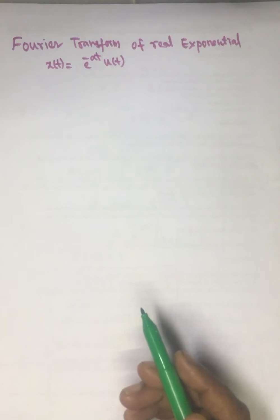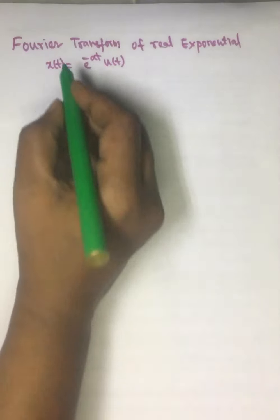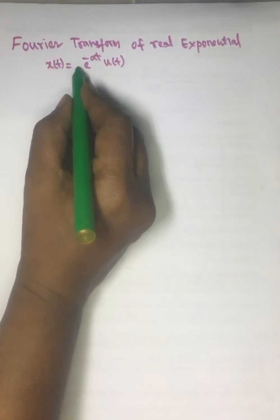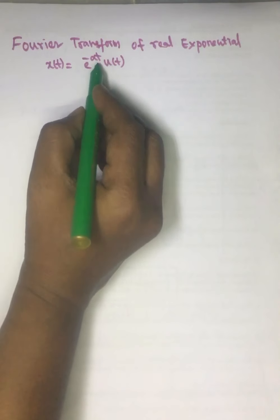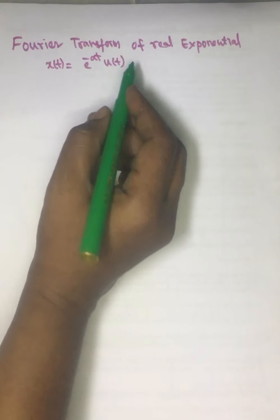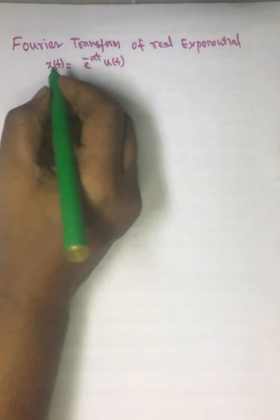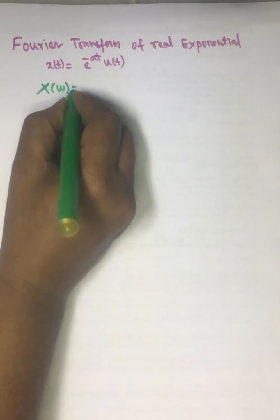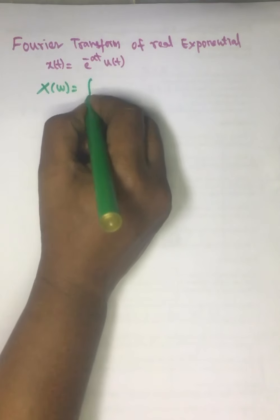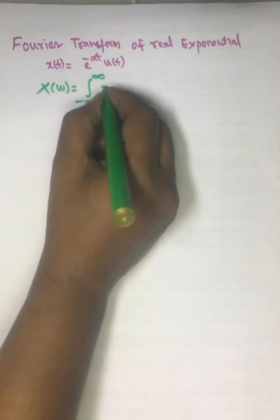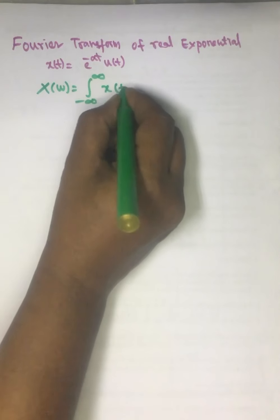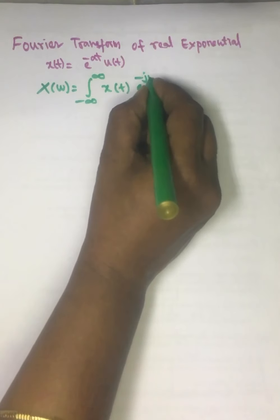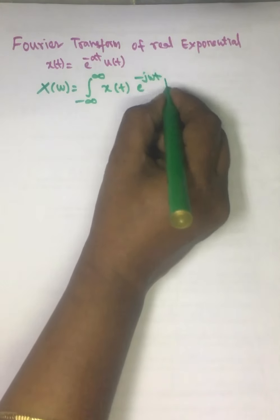In today's class, we will discuss the Fourier transform of a real exponential signal. It is given as x(t) = e^(-at)u(t). The Fourier transform formula is given as X(ω) = integral from minus infinity to plus infinity of x(t) e^(-jωt) dt.